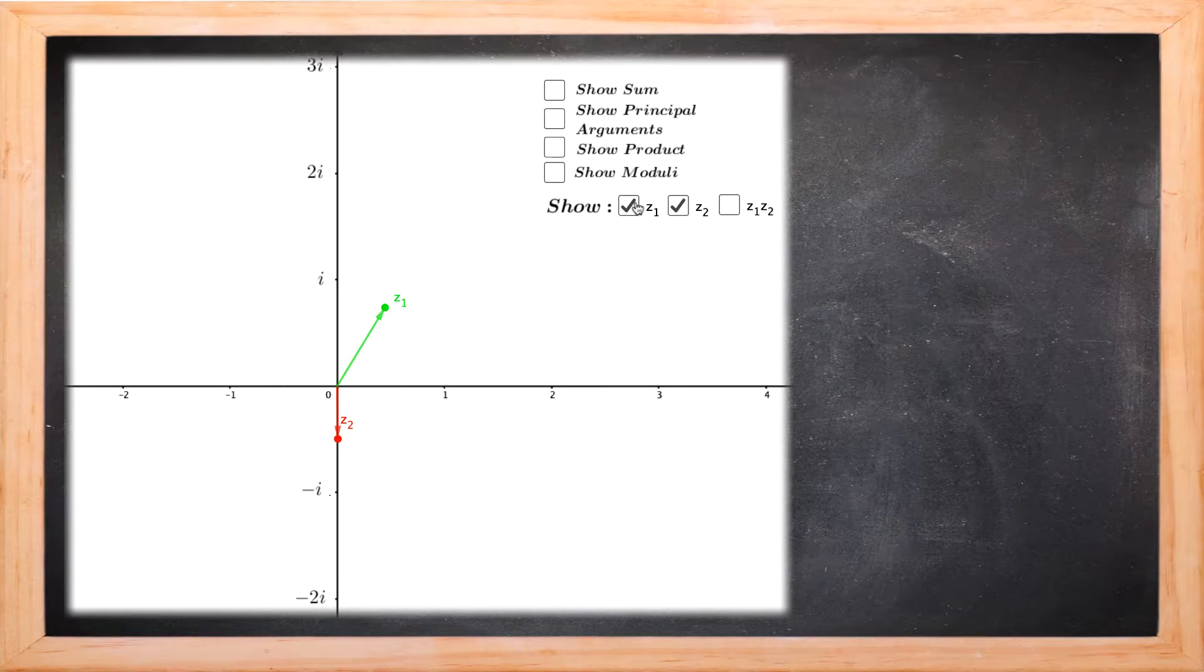Now if we look at the argument of Z2 it's negative pi upon 2. So we should have a rotation of Z1 by negative pi upon 2 and a scaling with scale factor 1.5.